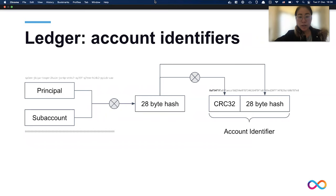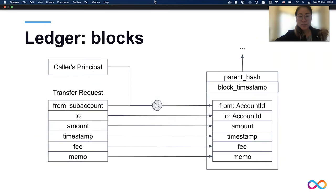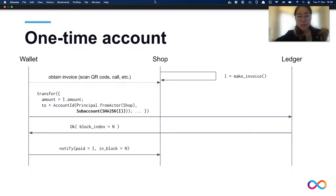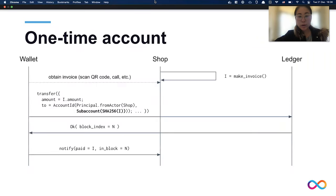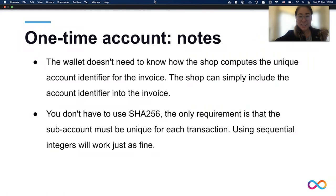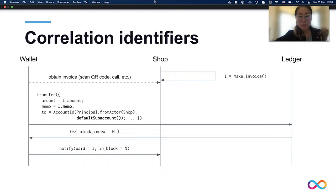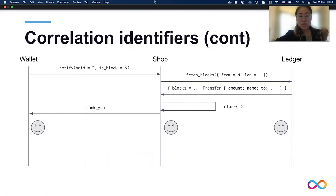We also got a question from Paula asking: is this the hardware wallet support we've been waiting for to manage seed neurons? No — this is around the ability for developers to program smart contracts that hold ICP or transfer it programmatically.